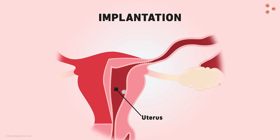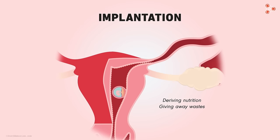That is the place where the baby grows. So the embryo now attaches itself in the uterus. Few of the main reasons for attachment are deriving nutrition, giving away wastes, and exchanging gases. This is served through this barrier that we can see here. This barrier is an organ called the placenta. So can we say that the placenta connects the baby with its mother? Absolutely!